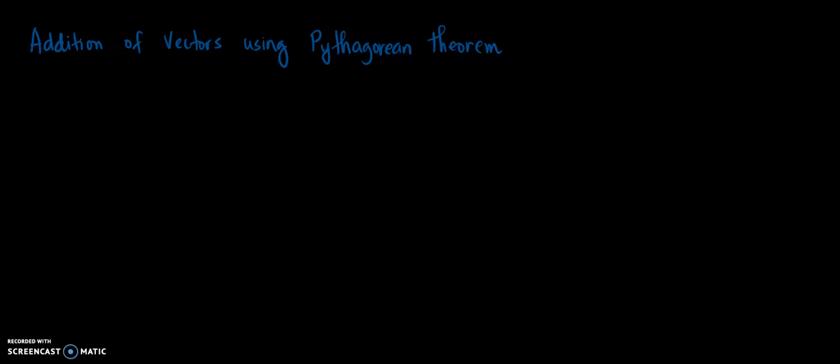Welcome back to DM Academy. For today, I will discuss the addition of vectors using the Pythagorean theorem. We will incorporate the concept of the Pythagorean theorem to find the resultant vector. We all know that the Pythagorean theorem is the common solution to solve a right triangle.